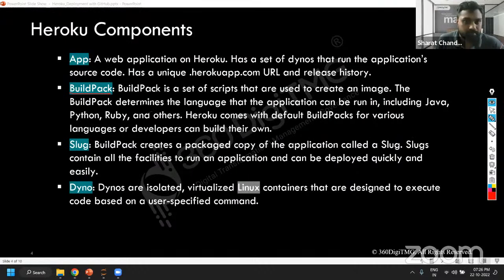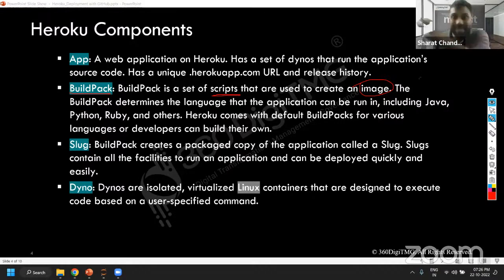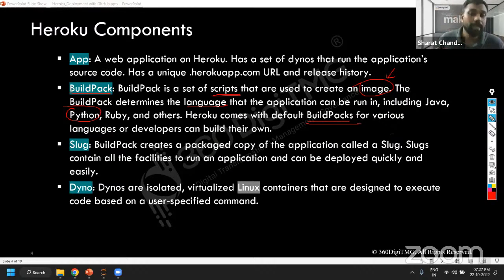Then we have buildpack. It is basically some scripts that run in the backend. Buildpack is like a script, and this script is used to create an image — an image is like an executable application. We use that image or executable application to get the URL. So buildpack is a set of scripts used to create the executable application. It automatically determines the language — you don't have to specify it. It automatically understands what language it is written in, and it also has various built-in buildpacks. You can also enhance it — buildpacks are there, you can procure them, you can purchase them for customizations.